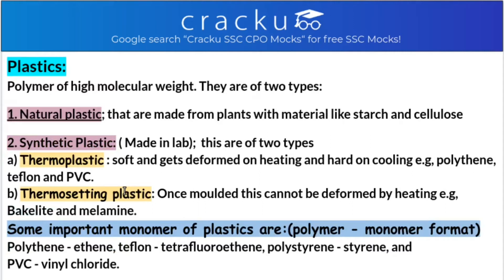Plastic is a polymer of high molecular weight. They are of two types: natural plastic, made from plant-like materials such as starch and cellulose, and synthetic plastic, which is made in labs. Synthetic plastic is further of two types: thermoplastic and thermosetting.